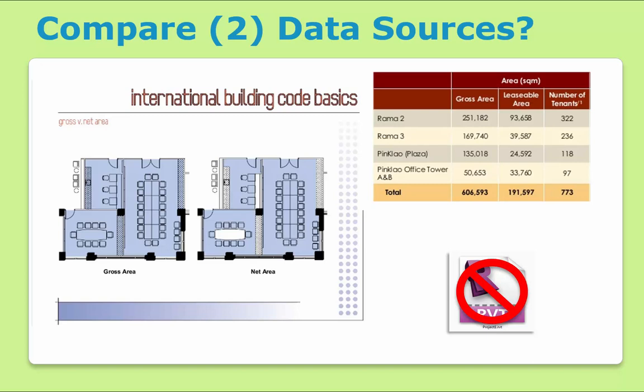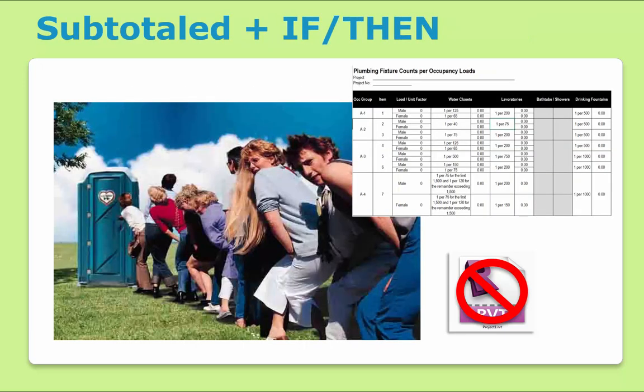For example, a table that requires the comparison of two separate groups of data, such as gross and net area, cannot be done with a Revit schedule. Another example is any data that requires first a summary, and then a rounding or a conditional format that is applied only to that summary data.